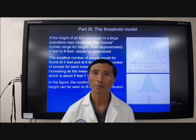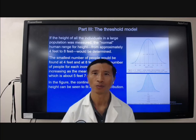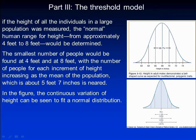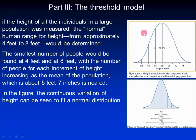Now let's move to part three: the threshold model. First, let's look at height. If the height of all individuals in a large population was measured, the normal human range for height — from about four feet to eight feet — will be determined. In this picture, the continuous variation of height can be seen to fit a normal distribution.